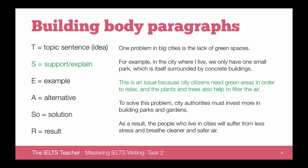As this is a problem and solution paragraph, we need to follow this with a solution: 'To solve this problem, city authorities must invest more in building parks and gardens.' Then we add the result of that solution. It's often nice to finish a paragraph with a result because the result links back to the first sentence, creating a very clear central topic — really important for coherence and cohesion if you want to score band seven or above. So: 'As a result, the people who live in cities will suffer from less stress and breathe cleaner and safer air.'